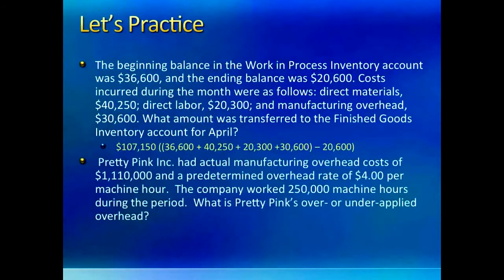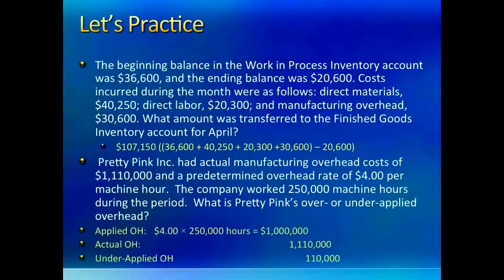The next one is also a simple question on applied overhead. The actual overhead is 1.11 million and you are given two numbers to figure out what the applied overhead would be. Multiply the budgeted manufacturing overhead rate by the actual number of hours. Since applied is less than actual, the difference will be under-applied by 110,000.